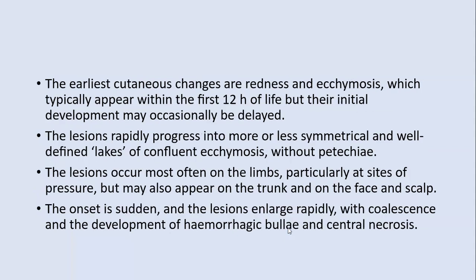The earliest cutaneous changes in purpura fulminans are redness and ecchymosis, appearing within the first 12 hours of life, though initial development may occasionally be delayed. The lesions rapidly progress into more or less symmetrical, well-defined areas of confluent ecchymosis. The lesions occur mostly on the limbs, particularly at sites of pressure, but also appear on the trunk, face, and scalp. The onset is sudden, and lesions enlarge rapidly with development of hemorrhagic bullae and central necrosis.